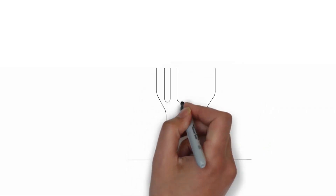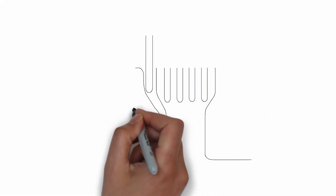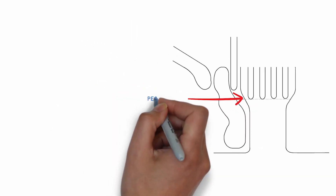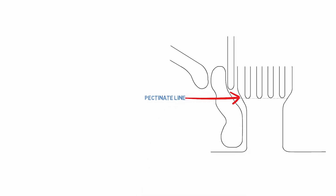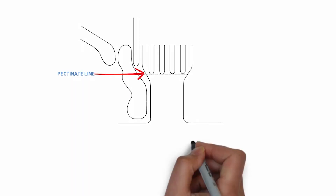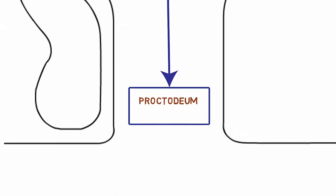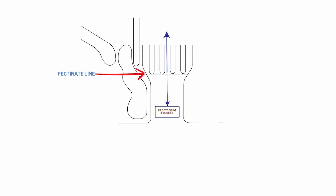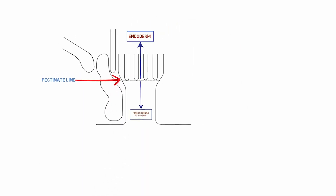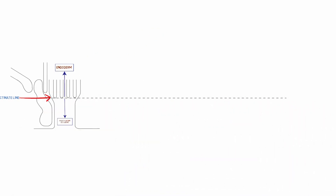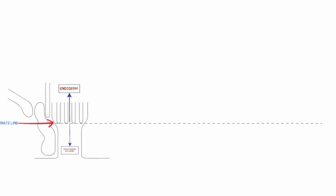Now we're going to look at the blood supply, nerve supply, and lymphatic drainage of the anal canal. Both morphologically and surgically, the most important landmark is the pectinate line, which divides the canal into upper and lower areas. The anal canal below the pectinate line develops from the proctodeum or ectoderm, while that above the pectinate line develops from the endoderm of the hindgut. This developmental difference leads to differentiation in blood supply, nerve supply, and lymphatic drainage.